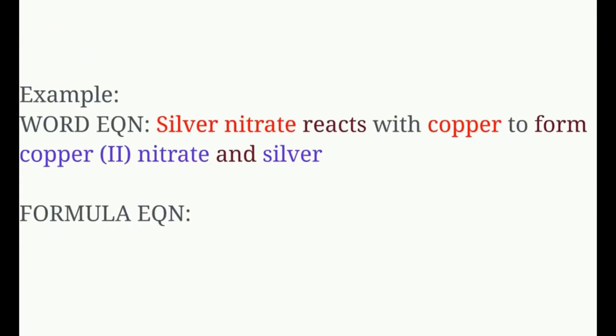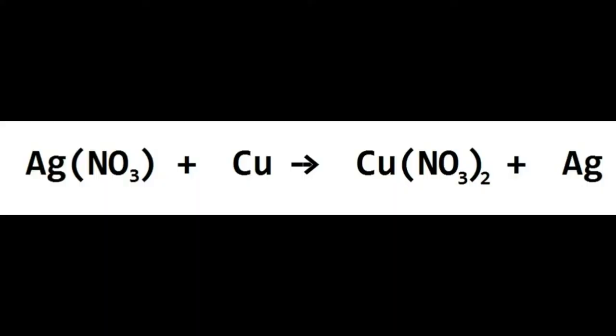Let's do the next example. You can't just write 'silver nitrate' — you need to crisscross the charges. The charge of silver is +1. The charge of nitrate is -1. So you crisscross these and happen to get AgNO₃. It says 'reacts with copper' — Cu. Don't give it a subscript yet. We're not at the balancing step.